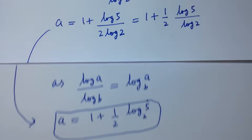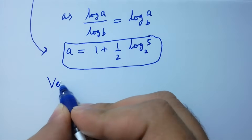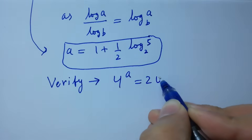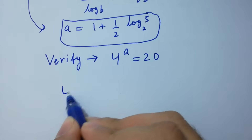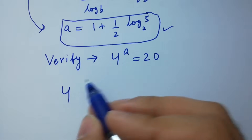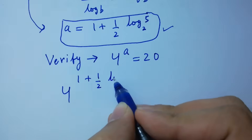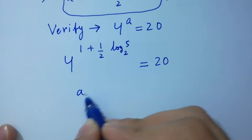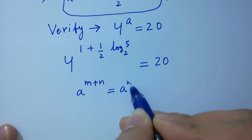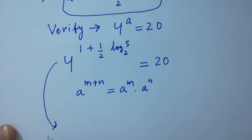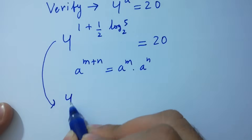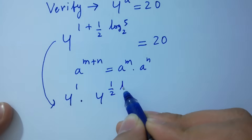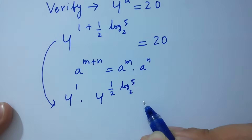In the next step, I am going to verify that 4 to the power a equals 20. Put the value here: 4 to the power 1 plus 1 over 2 log 5 to the base 2 equals 20. Using a to the power m plus n equals a to the power m times a to the power n, we get 4 to the power 1 times 4 to the power 1 over 2 log 5 to the base 2 equals 20.